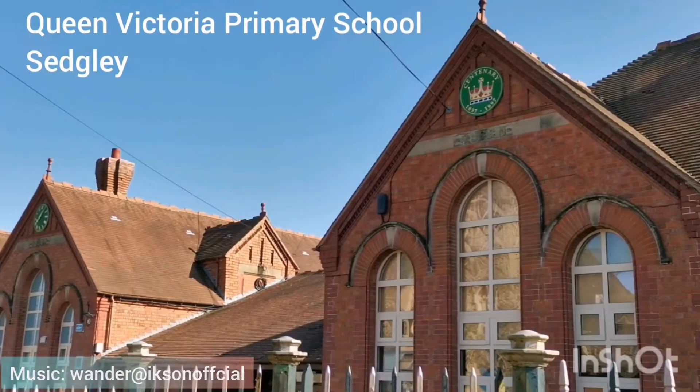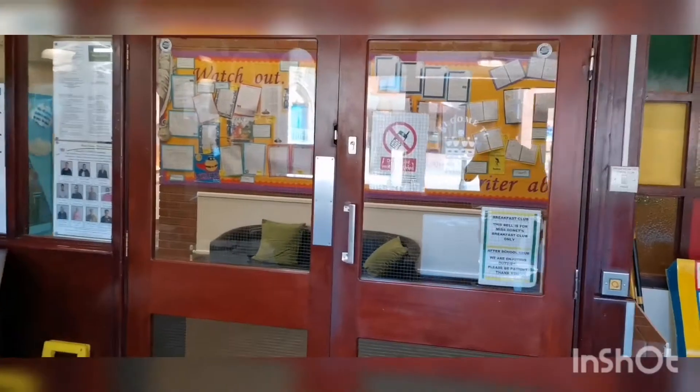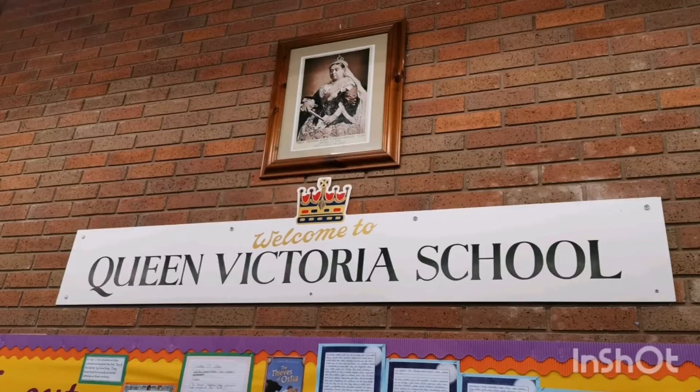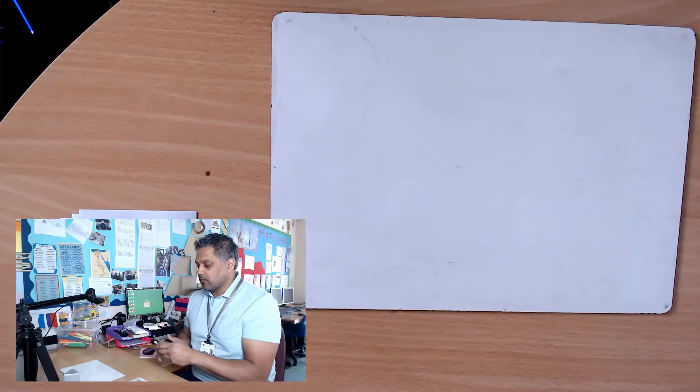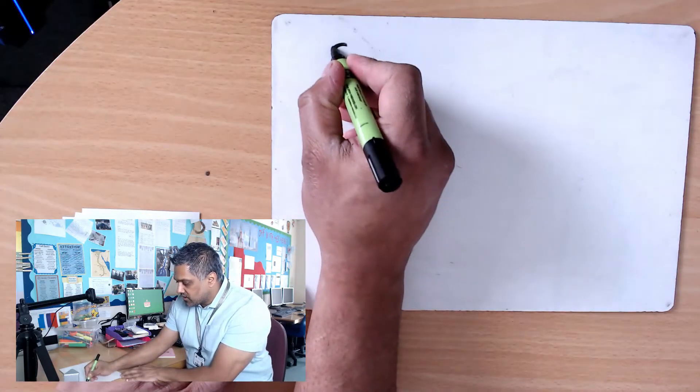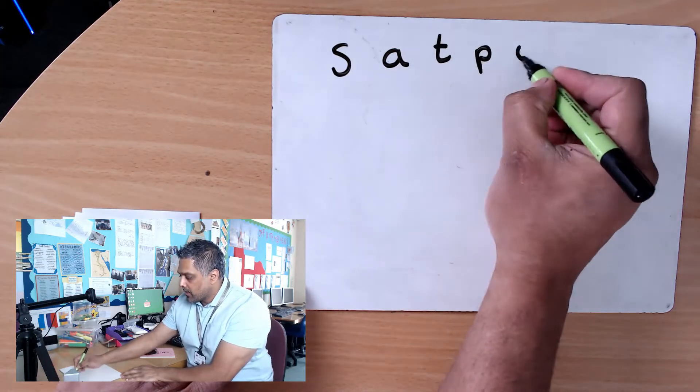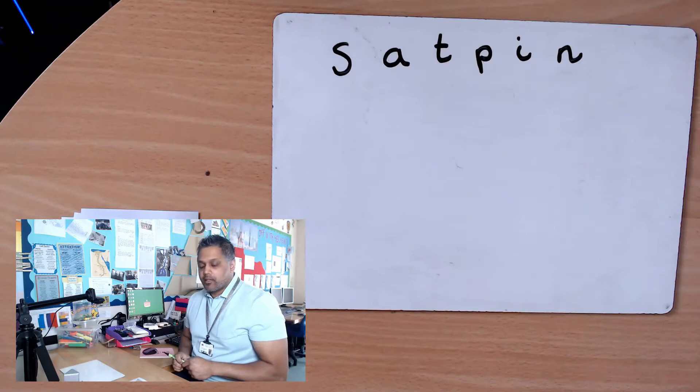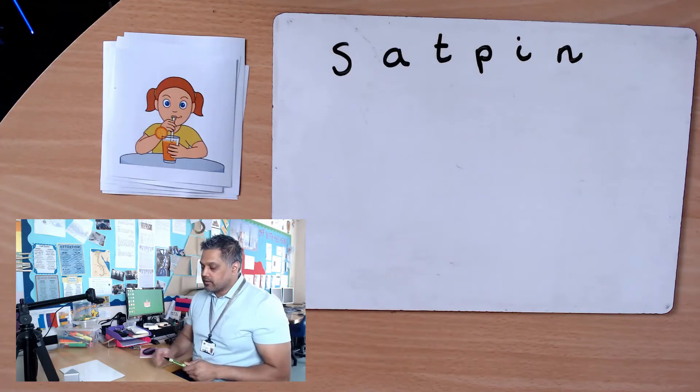After this short intro, other teachers have gone through the sounds with sat pin, so let's just remind ourselves. We'll write them down and go through the sounds. The first one was S, and then A, T, P, I, N. So there's our sat pin, our letters and our sounds to go with them. Today I've got some cards, some little pictures of things that we're trying to spell, words we're going to try and spell.